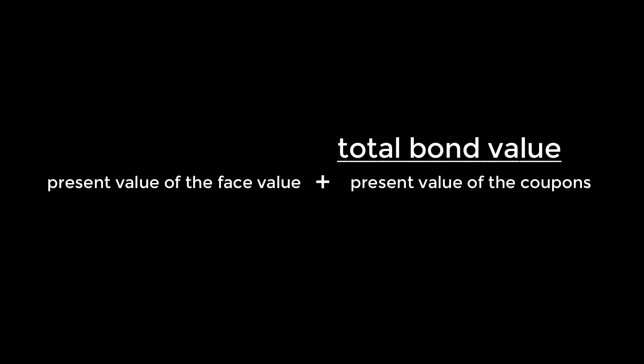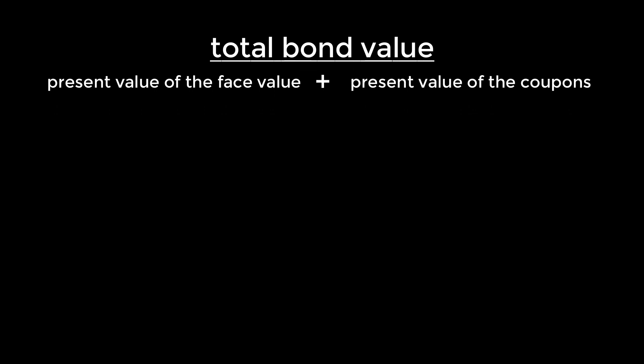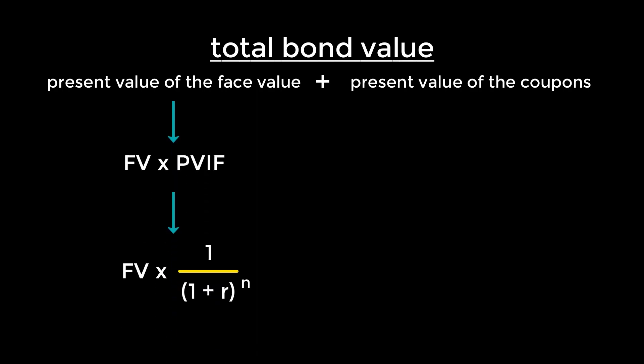The value of a bond can be broken down into two components. A portion of the bond's value comes from the present value of its face value, and another portion comes from the present value of the coupon payments. When we add these two together, we get the total value of the bond. The present value of its face value — one cash flow of usually $1,000 — is given by the present value formula for a single cash flow: we multiply the face value by the present value interest factor at rate R and periods N, where R is the YTM adjusted for payment frequency, and N is time to maturity multiplied by the number of payments per year.